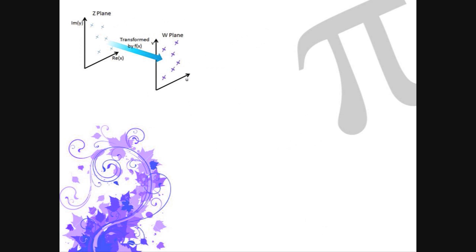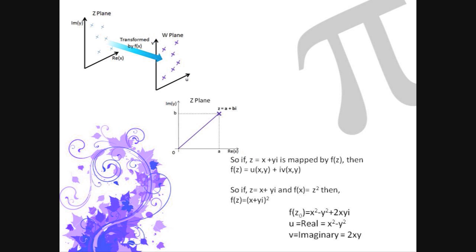The plane which is created to show the application of the complex function f of z to the complex plane is a w plane. The complex numbers on the z plane are mapped by the function f of z to the w plane, and the two axes are the u and the v axes, the real and imaginary axes respectively. So, u equals real part of f of z and v equals imaginary part of f of z.